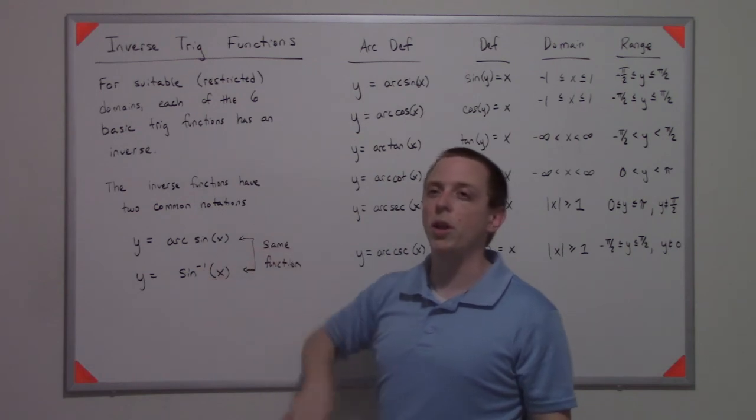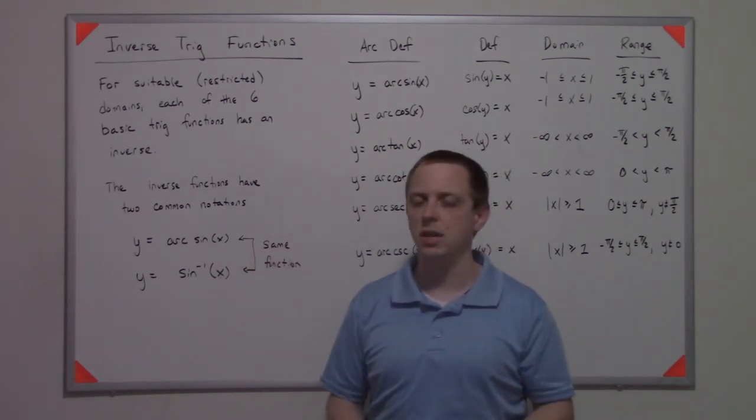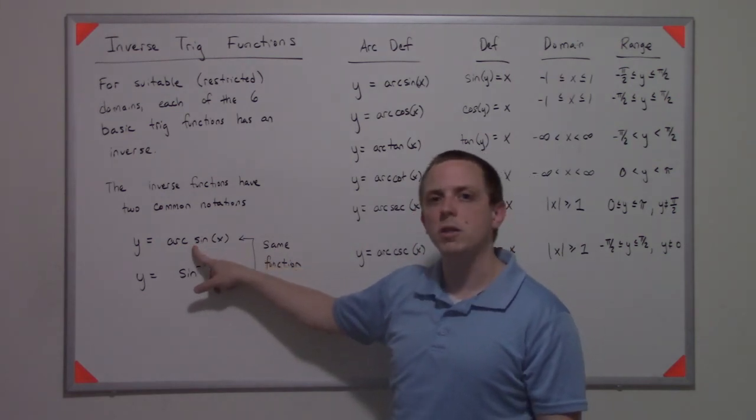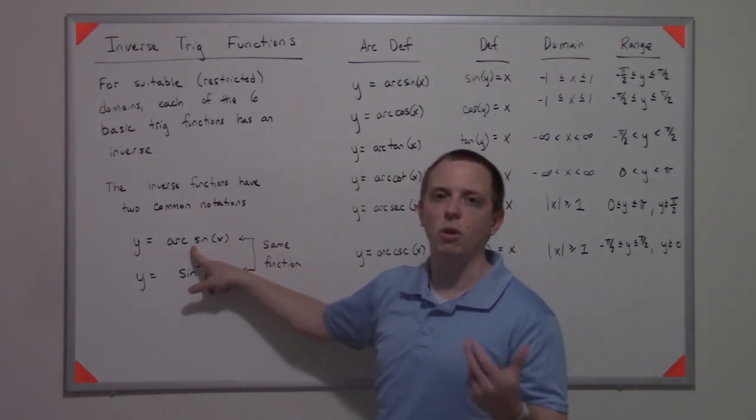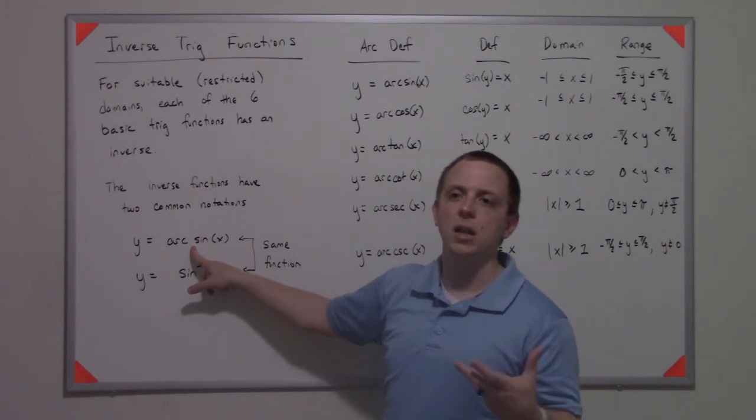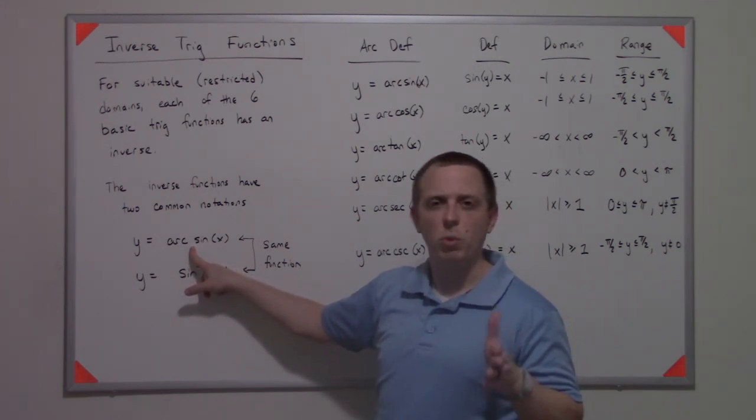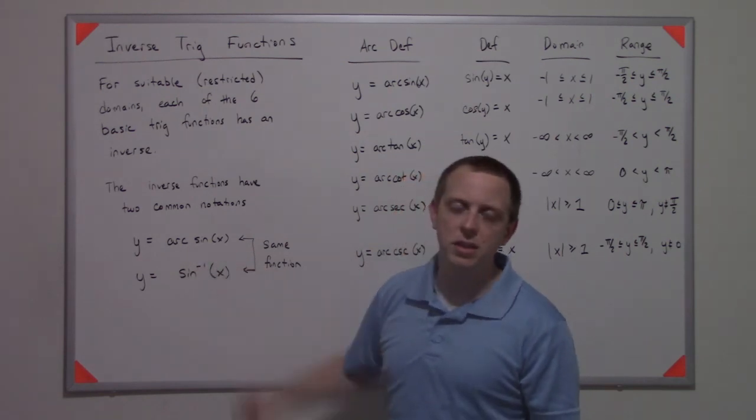So algebraically this kind of looks like it would be one over sine of x, or the cosecant of x, but it's not - it's the inverse function. A lot of people like to write it as arcsine, arc cosecant, or arctangent because that allows them to be more explicit with what they mean. There's no ambiguity in this statement.